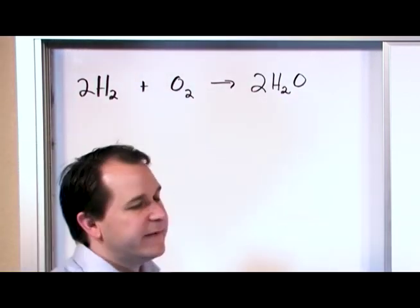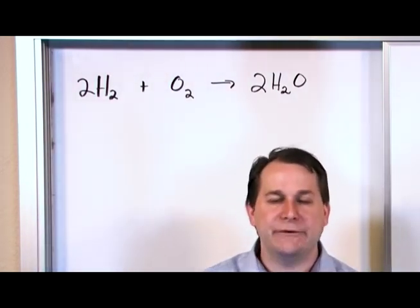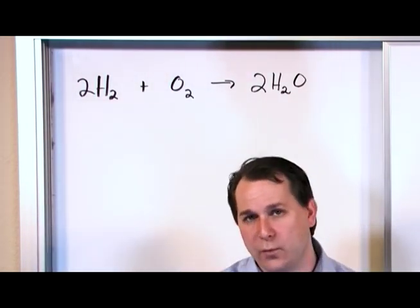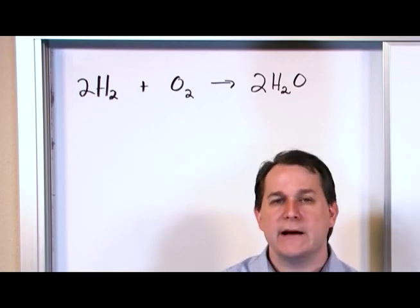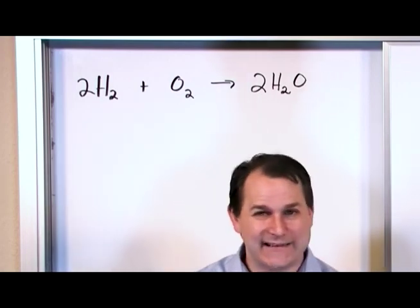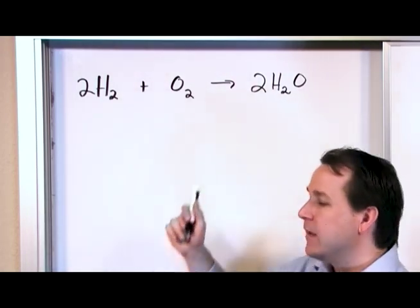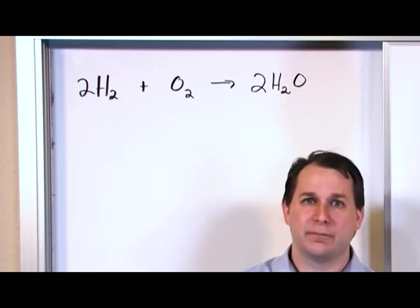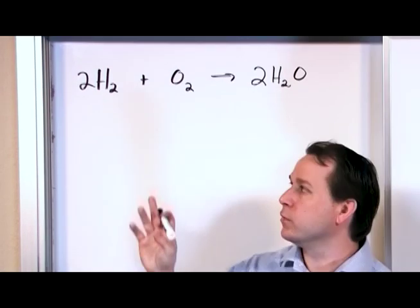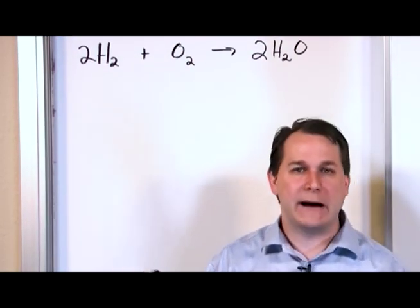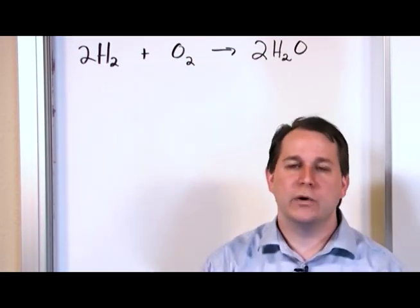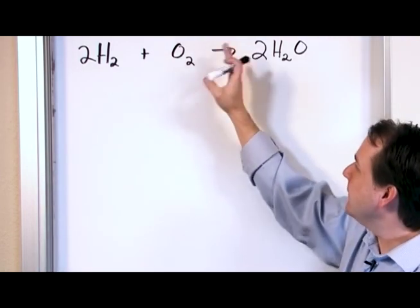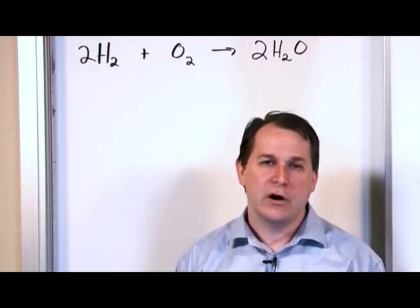What it basically says is if we take hydrogen gas and mix it with oxygen gas — which, by the way, we do in rocket engines — and if we react it, then it produces water. It also produces a lot of heat because it produces an explosion. That's what's sort of left out of this reaction; we'll get to that later in chemistry class. But there's basically heat produced and also a lot of water produced.